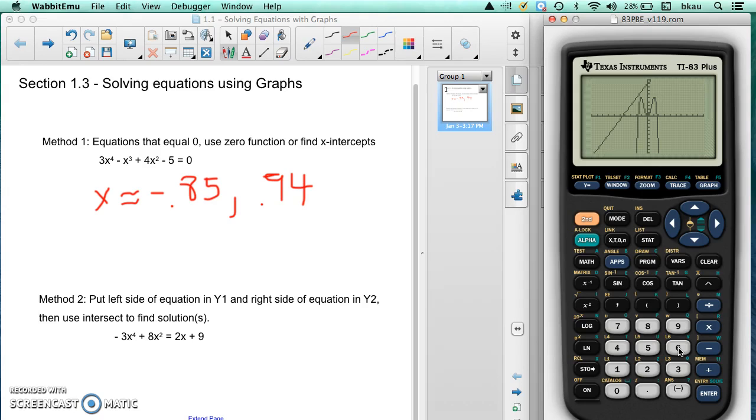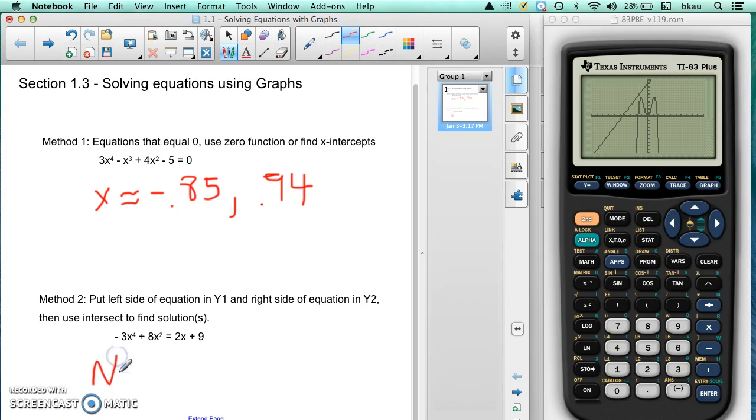Here's the second graph. Well, in this case, there is no intersection points. So there would be no solution. All right. So in this one, we would write no solution. No solution doesn't intersect. No solution to this one.